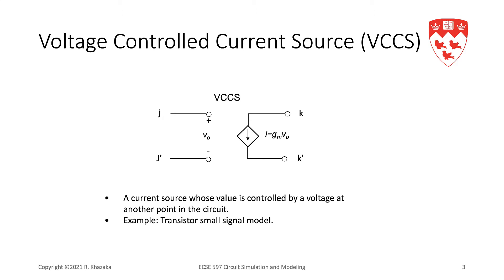So, let's say we have a voltage-controlled current source between node k and k' where the controlling voltage is between node j and node j'. That's something we can see often, for example, in transistor models. So, we want to be able to have a stamp for such a controlled source.